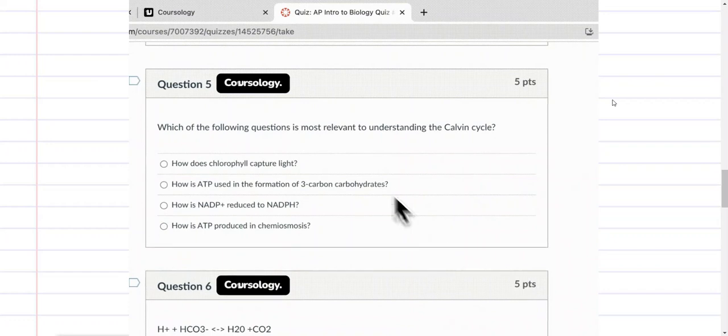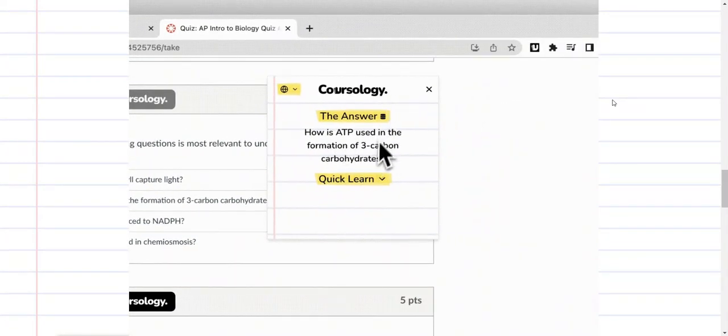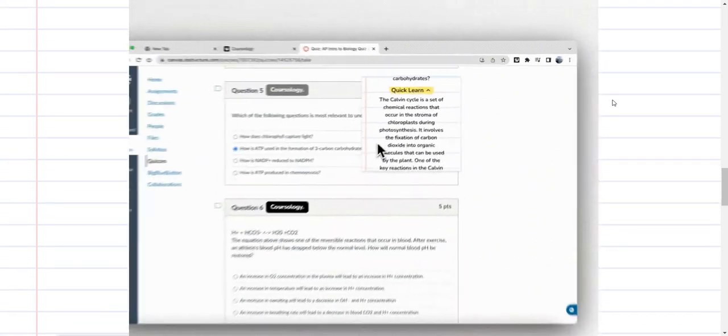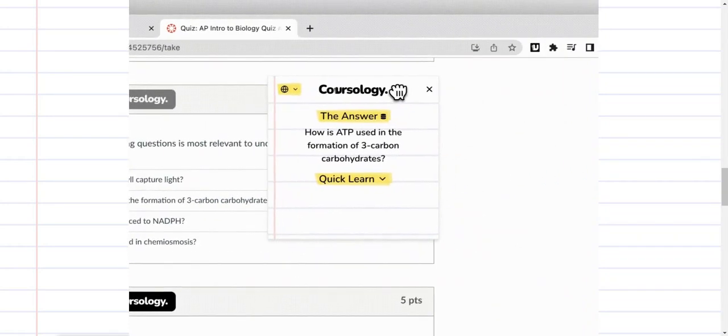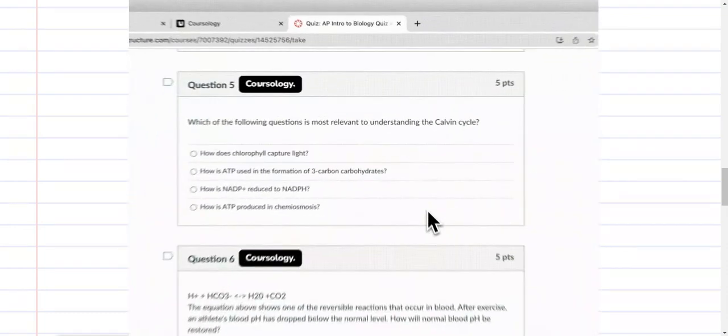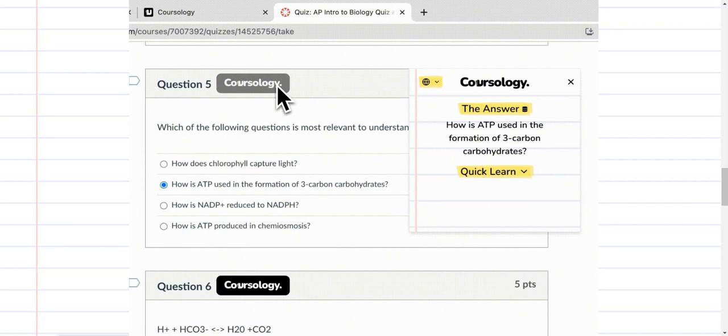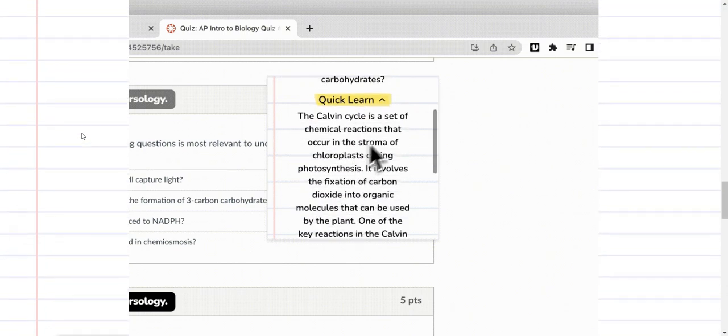To actually use it, whenever you are on your learning platform or whatever learning management platform you're using, maybe Canvas 2.0 or whichever one you are using, you will see the Corsology logo beside your question. For example, question 5, you will see the logo. Just click on the Corsology button and a small pop-up will appear by your side. It will give you the answer to the question and also give you a small explanation to accompany your answer so you understand the answer better.